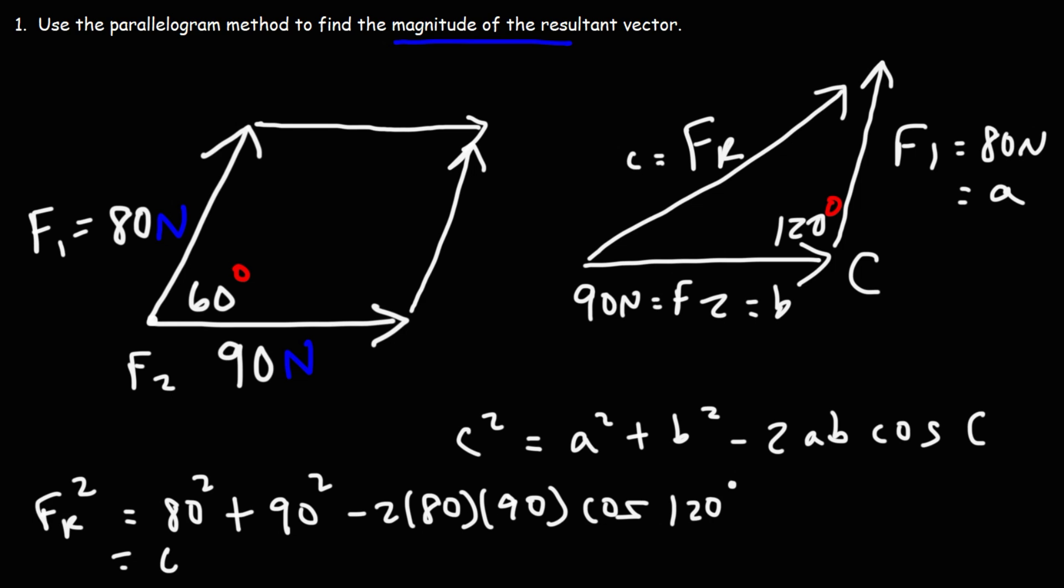80 squared is 6,400. 9 times 9, or 9 squared is 81. So 90 squared is going to be 8,100. 2 times 80 times 90.